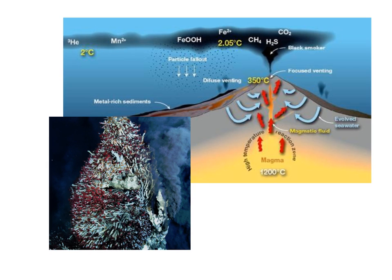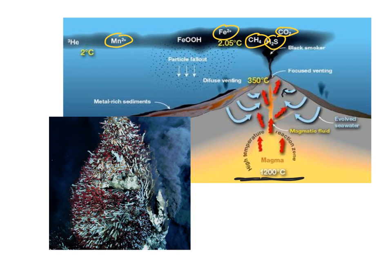A hydrothermal vent is where magma below the surface heats everything up and ocean water is pulled in through cracks in the ocean floor. The water gets superheated and erupts through the top in what we call a black smoker — named because it looks like a big cloud of black smoke rising from the ocean floor. Black smokers release chemicals including carbon dioxide, hydrogen sulfide, methane, iron, and magnesium. Bacteria can use these chemicals through chemosynthesis to create sugars, much like plants do with sunlight.